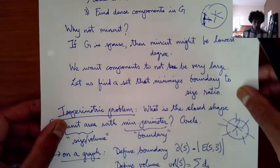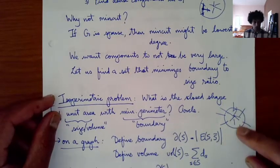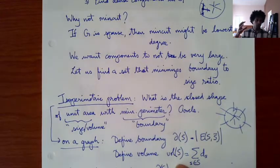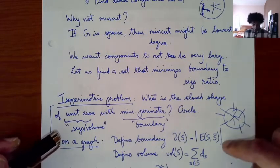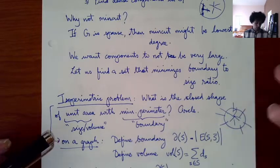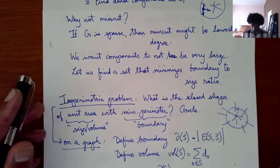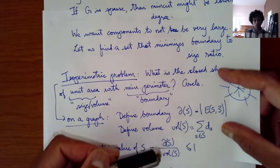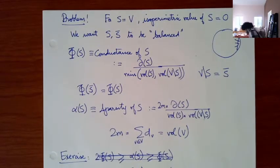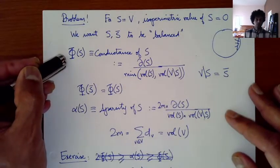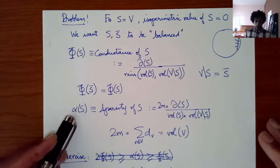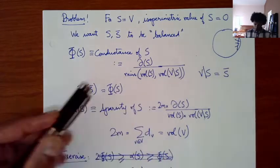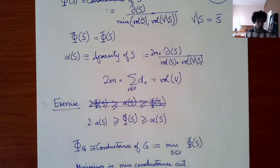We defined the conductance of a graph to be the boundary divided by the minimum of the volume and the volume of the complement. The boundary of a graph is the number of edges across the cut, and the volume of a set is the total number of edges incident to those vertices — the sum of degrees in S. The boundary is the number of edges from S to its complement. We also defined the sparsity, where we take the product of the volumes instead, and these are a factor of two away from each other.